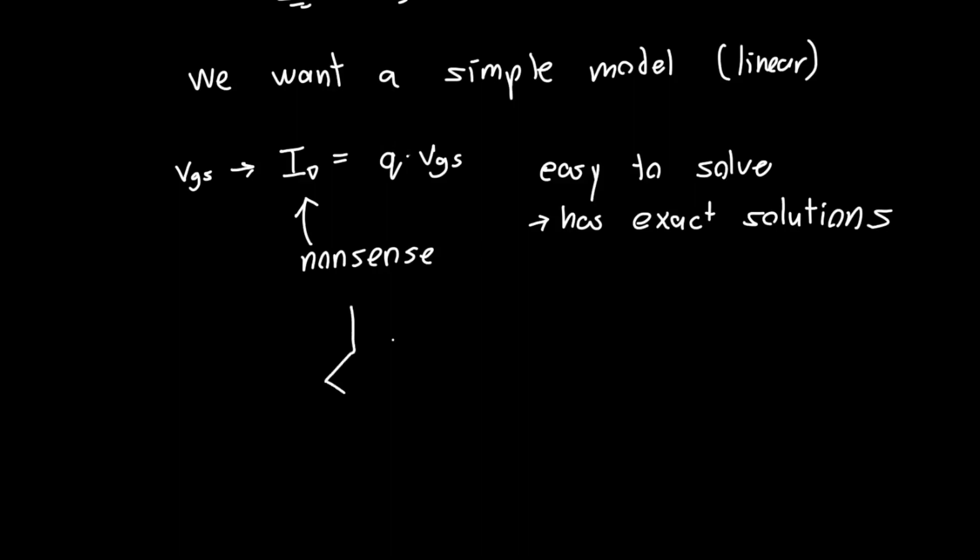So we want an approximate, just simple voltage-controlled current source, where ID is equal to G times VGS. We want this current to be equal to, actually, let's draw the MOSFET the right way. We want this current to be equal to just some constant G times VGS.